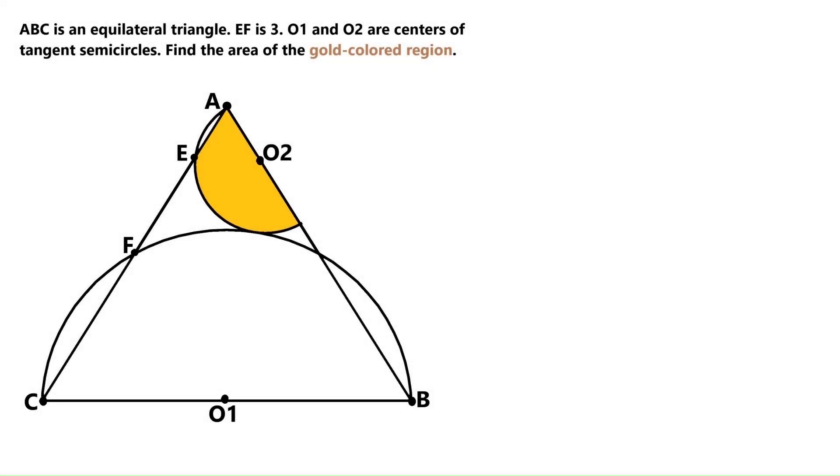This geometry problem is absolutely beautiful, so make sure you don't miss any part of it. We've got this equilateral triangle ABC, and this big semicircle is sitting on a triangle's base, and its center is O1, and this smaller semicircle is cramped up here, and its center is O2.